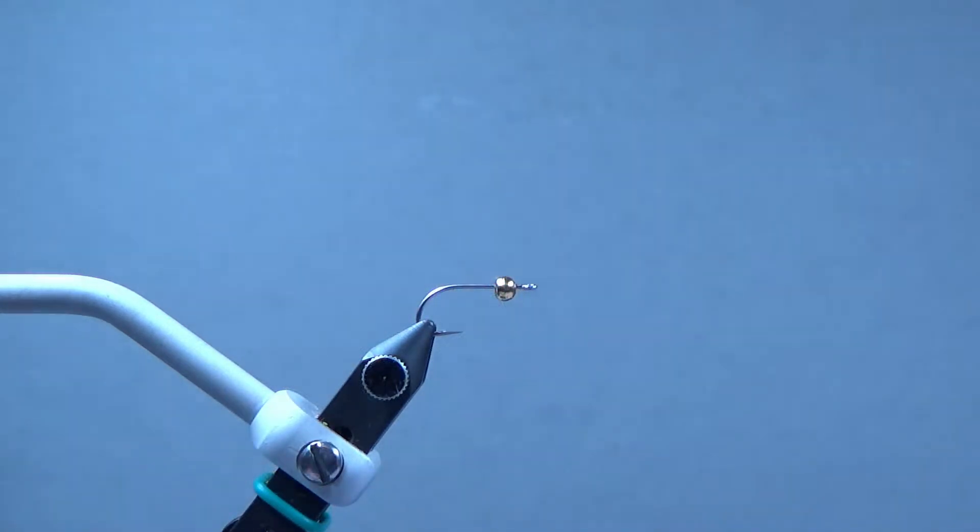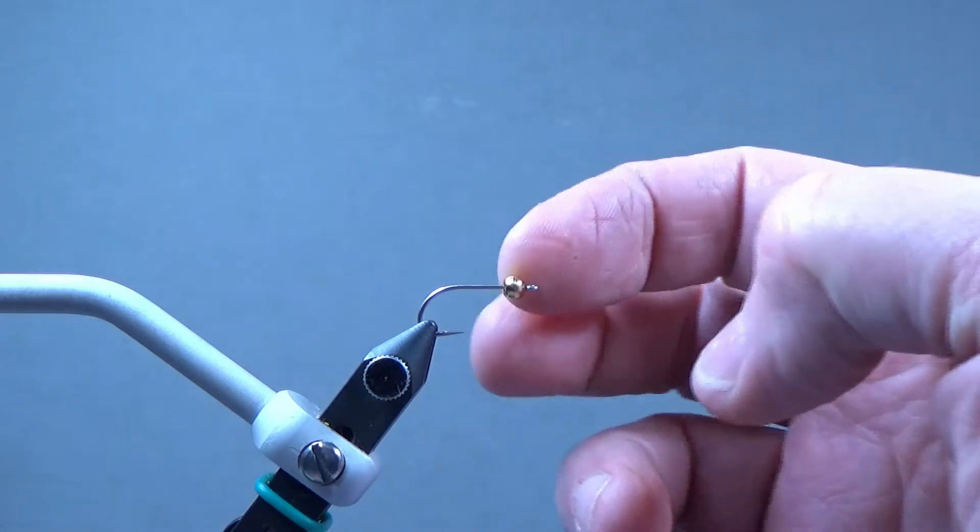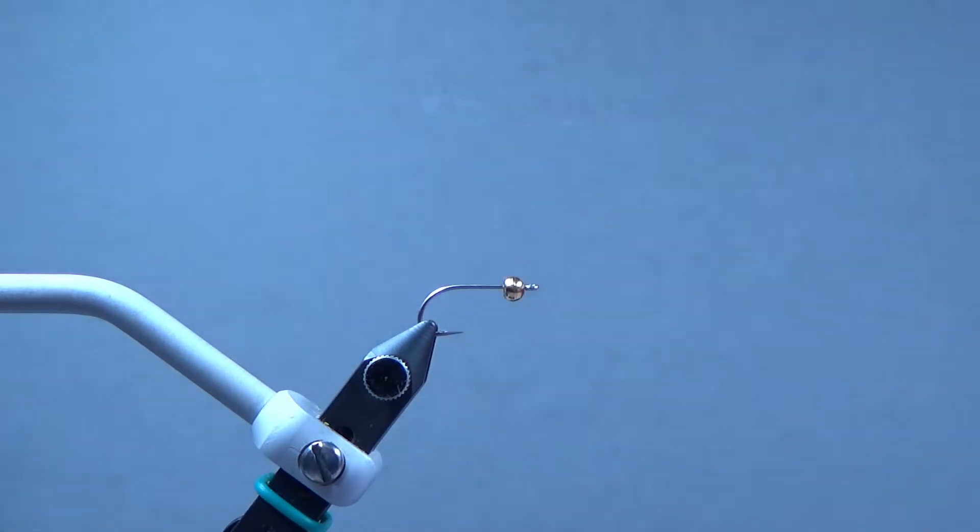Tying the squimp. We're going to start off with a size 8 saltwater hook, stainless steel. I believe this is an SS15. I've already put a 4 millimeter bead on it.